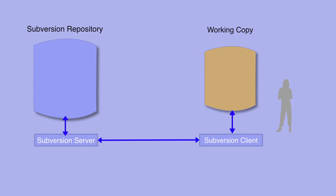The client can request information from the server about the content of the repository, and it can provide new information to be stored in the repository. This is the architecture of a Subversion installation.